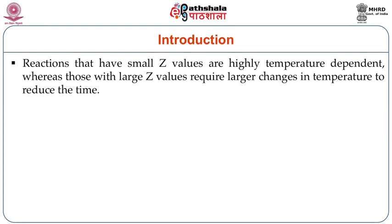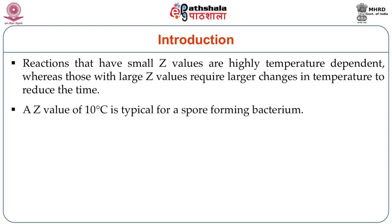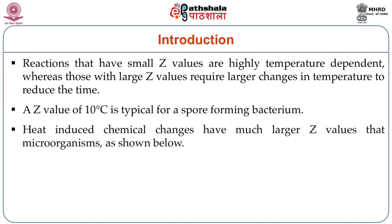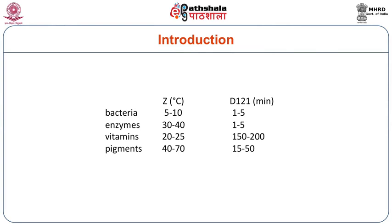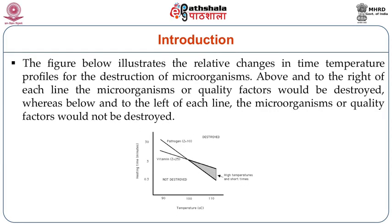We have different kinds of reactions which take place during pasteurization. Reactions that have smaller Z values are highly temperature dependent, whereas those with larger Z values require larger changes in temperature to reduce the time. For example, a Z value of 10°C is typical for a spore-forming bacterium. Heat-induced chemical changes have much larger Z values than microorganisms. As per the illustration shown, above and to the right of each line, the microorganisms or quality factors would be destroyed, whereas below and to the left of each line, the microorganisms or quality factors will not be destroyed.